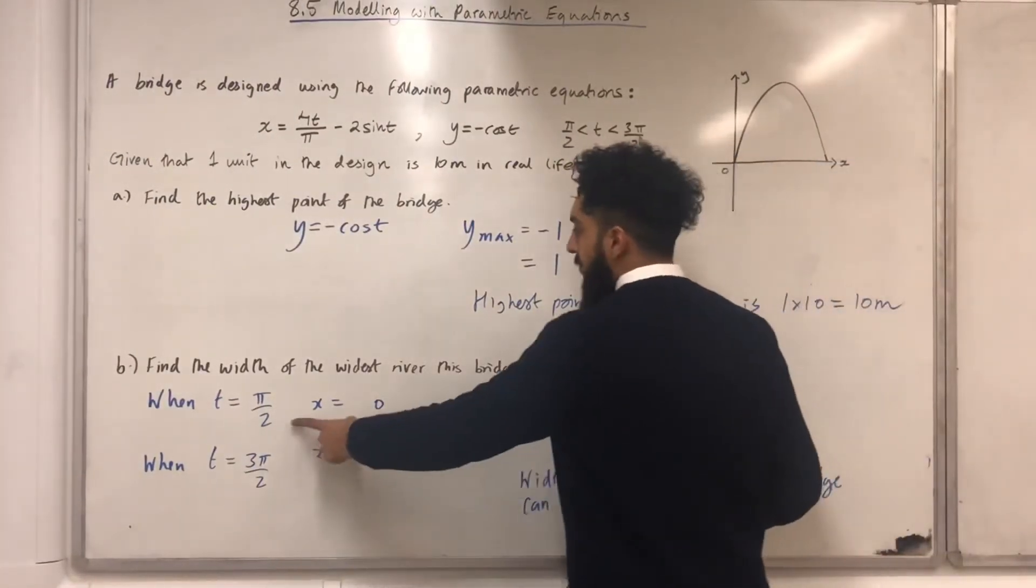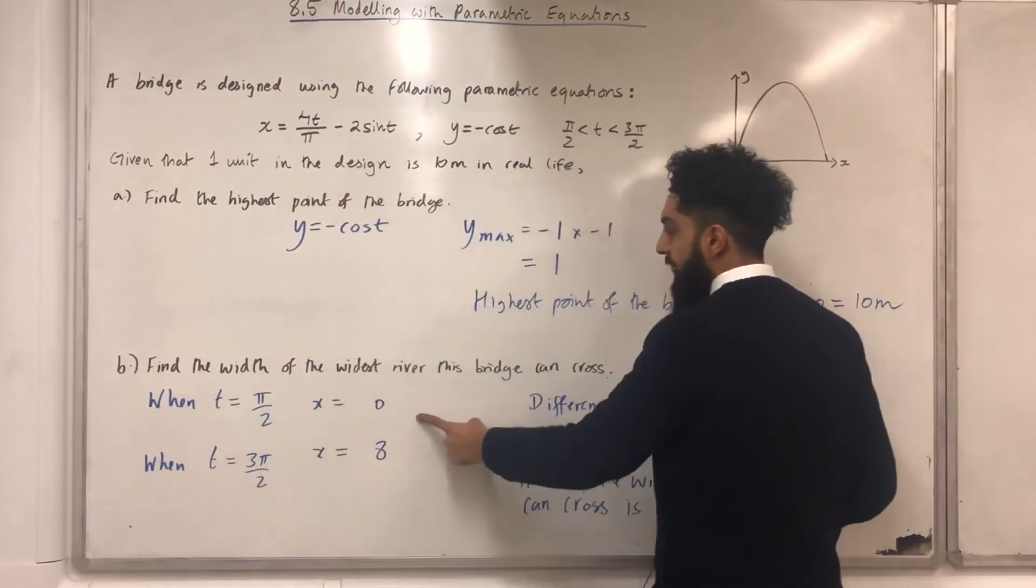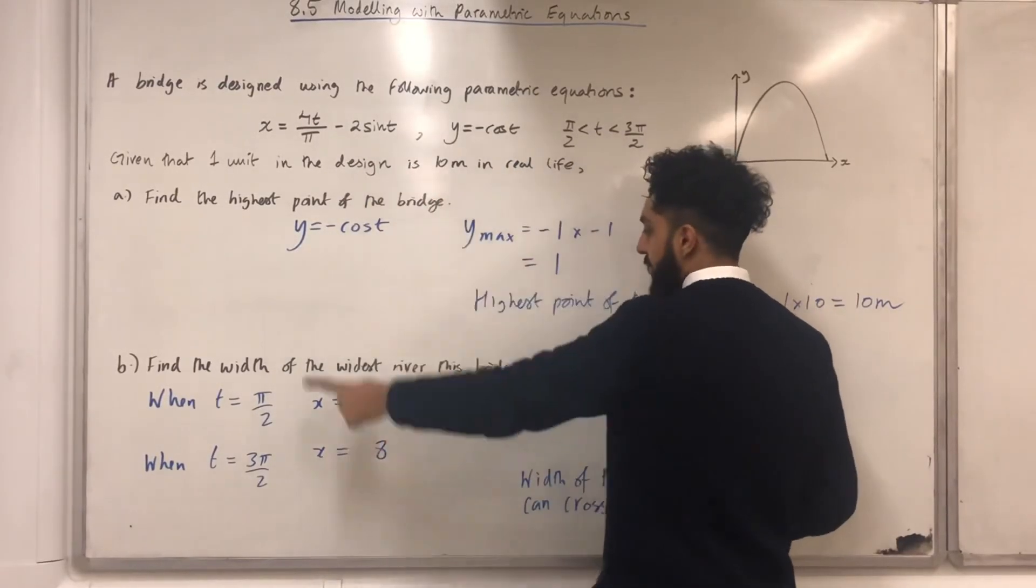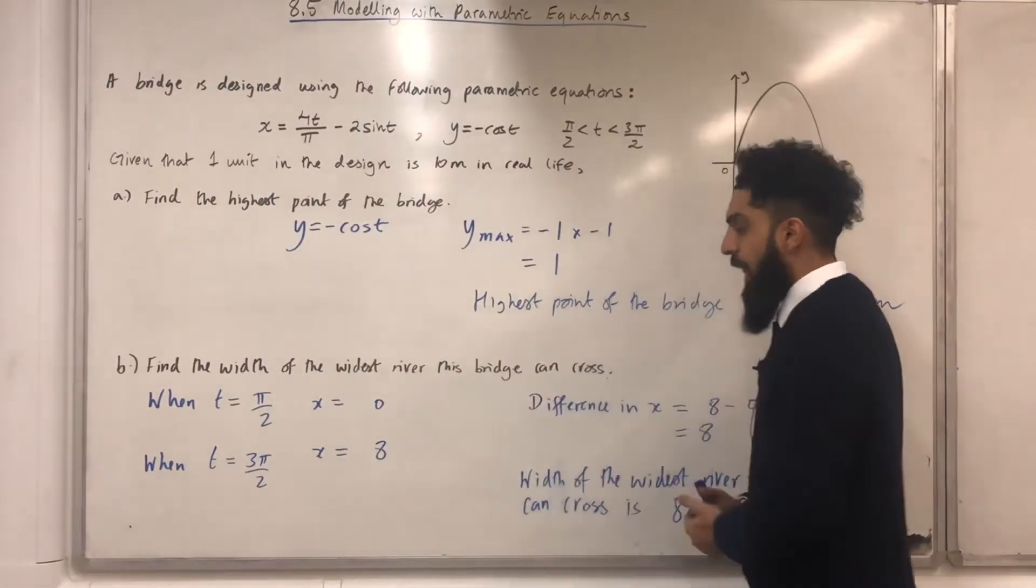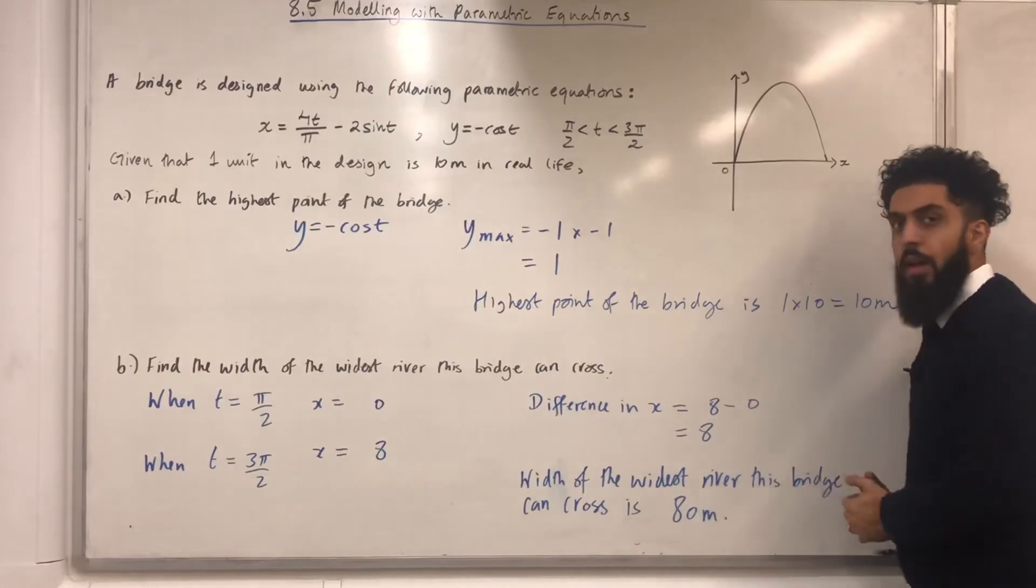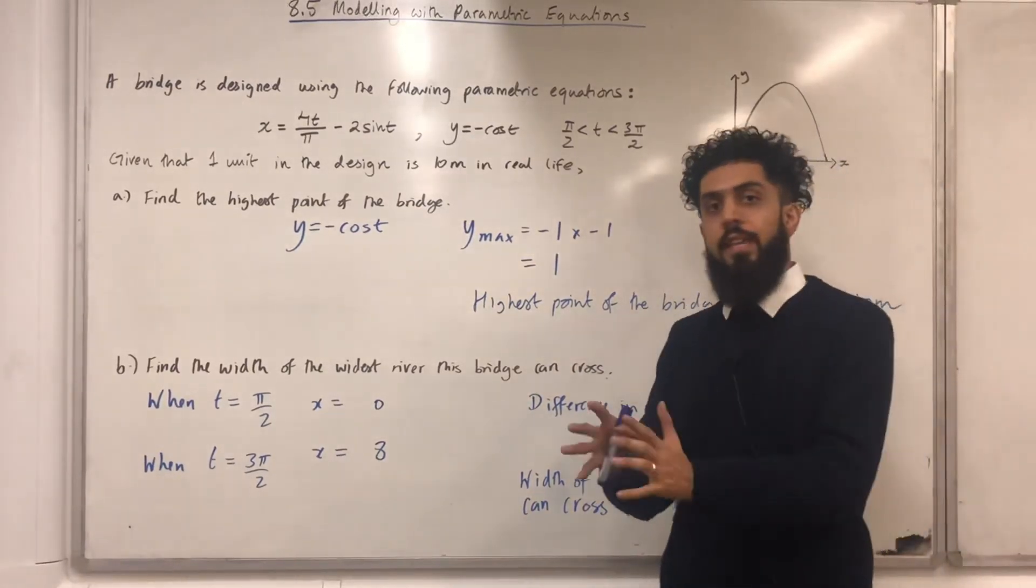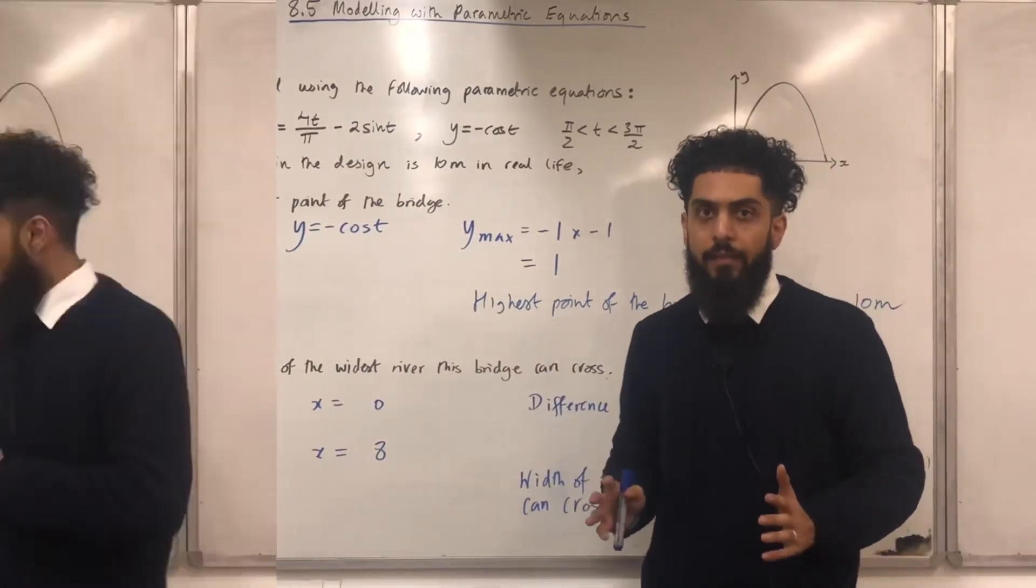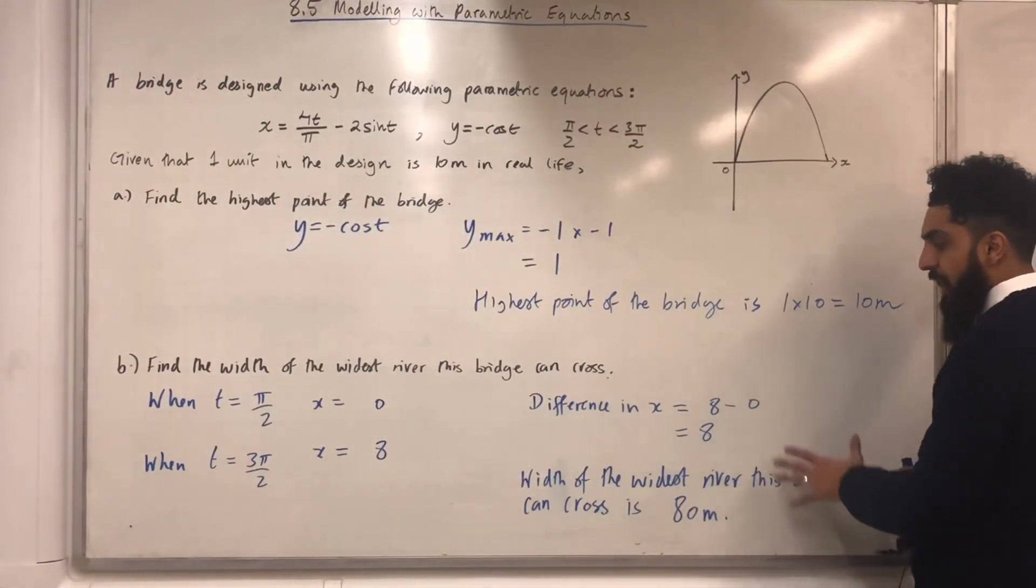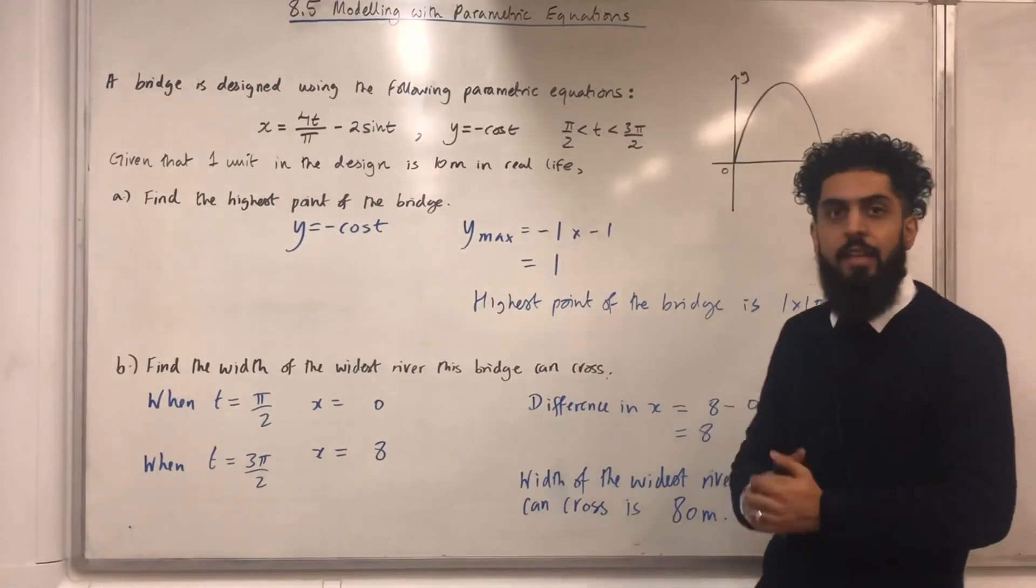Substituting t equal pi over 2 into the x equation gives me x equal 0. Substituting t equal 3 pi over 2 into the x equation gives me x equal to 8. Now, the difference in x will be 8 minus 0, which is 8. I know that one unit in the design represents 10 meters in real life. My conclusion is that the width of the widest river this bridge can cross is therefore 80 meters.